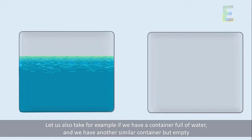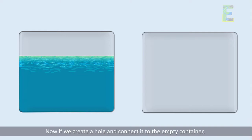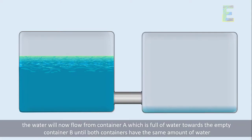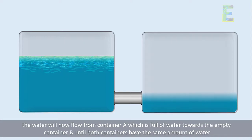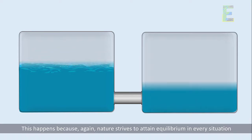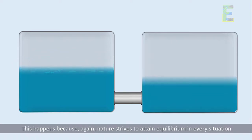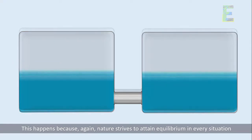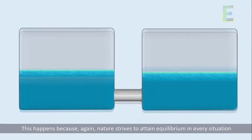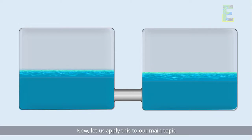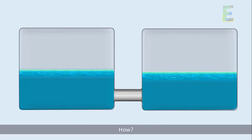Let us also take for example: if we have a container full of water and another similar but empty container, and we create a hole connecting them, the water will flow from container A — which is full — towards the empty container B, until both containers have the same amount of water. This happens because nature strives to attain equilibrium in every situation. Now let us apply this to our main topic.